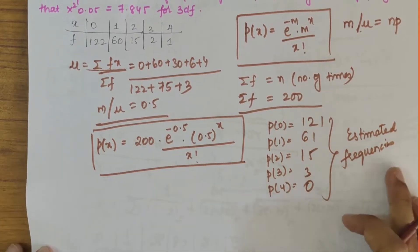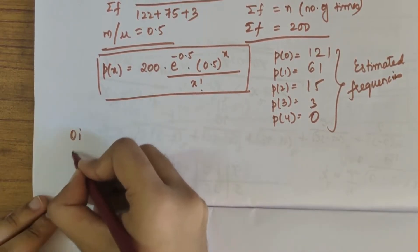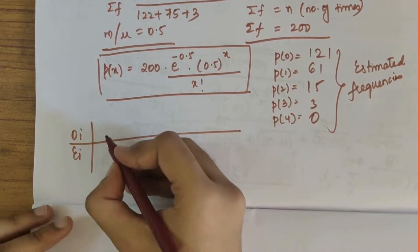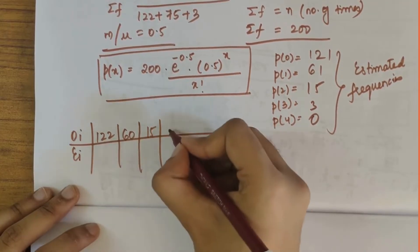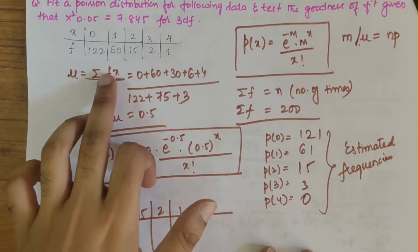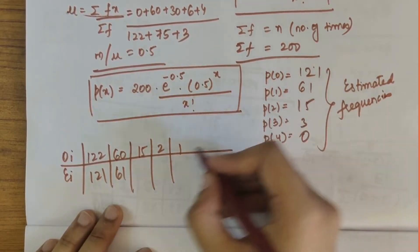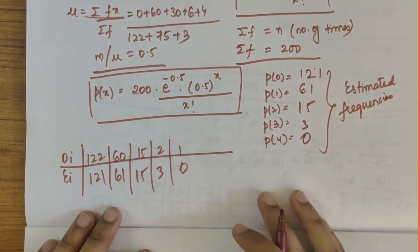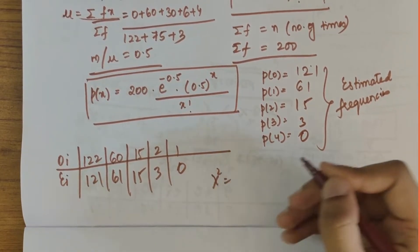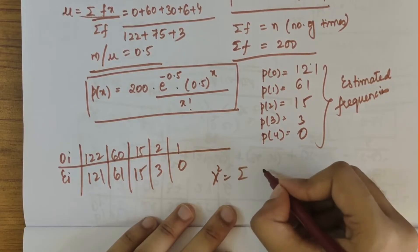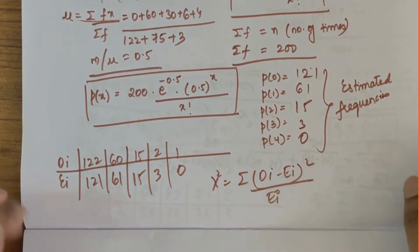Now let's compute a table with Oi and Ei values. Oi values are 122, 60, 15, 2, and 1. I am writing the values from the given question only. The Ei values that I have calculated are 121, 61, 15, 3, and 0. For solving this, chi-square equals summation of Oi minus Ei whole square divided by Ei.